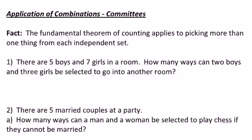In the first one, there are five boys and seven girls in a room. How many ways can two boys and three girls be selected? Well, the boys and the girls are independent of each other, so you just say, how many ways can I select the two boys?